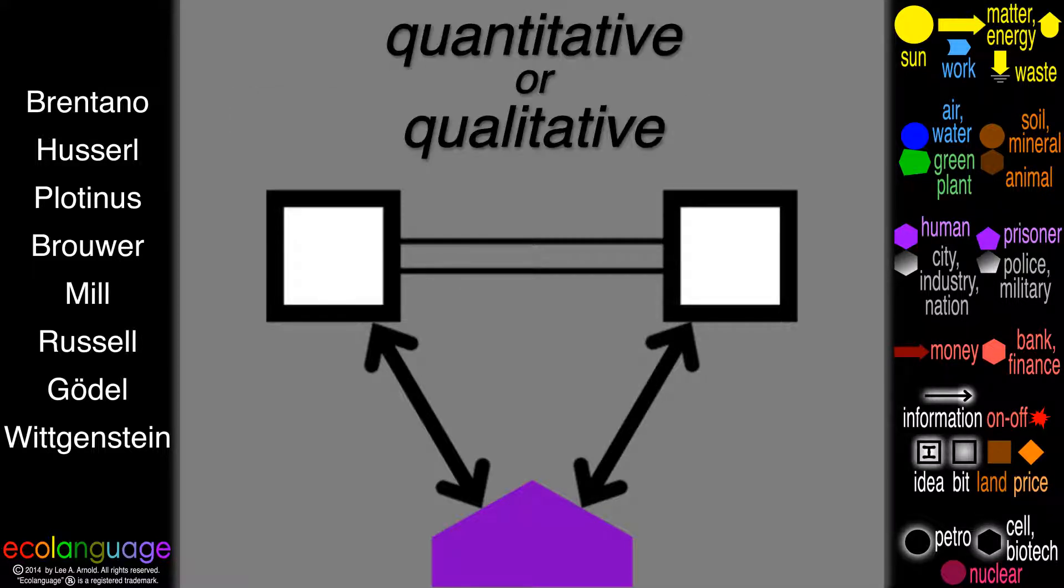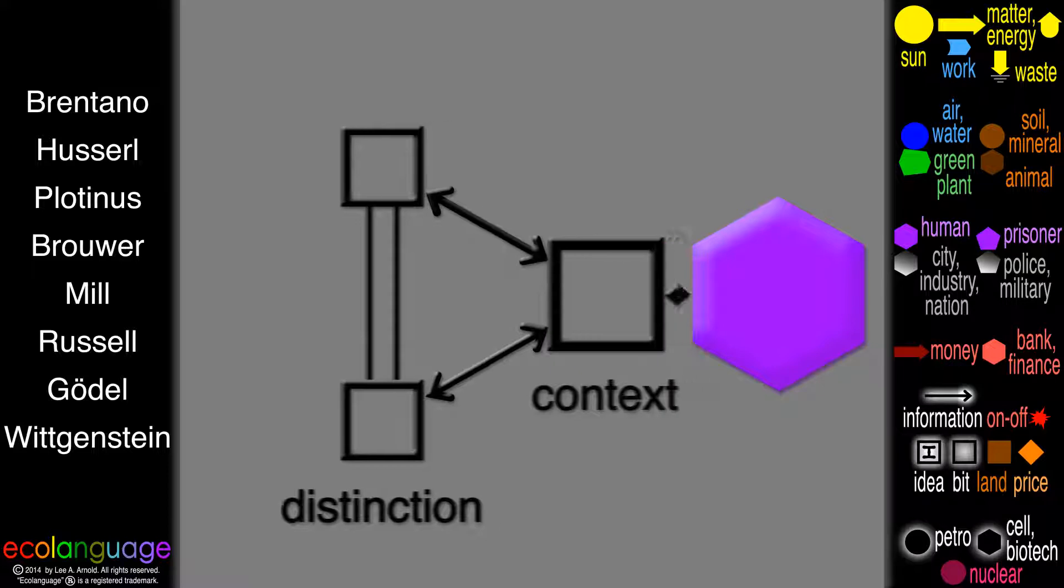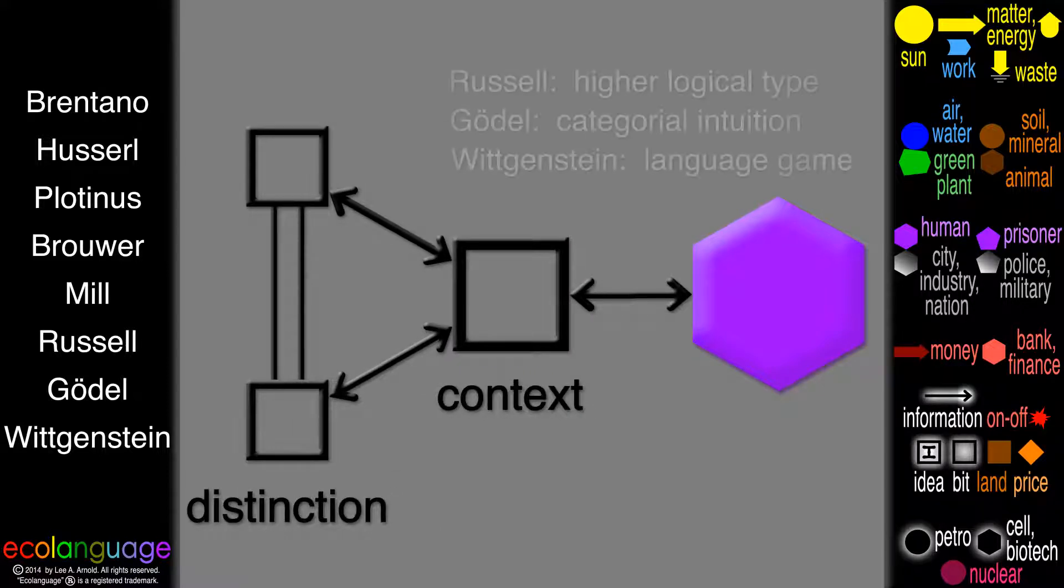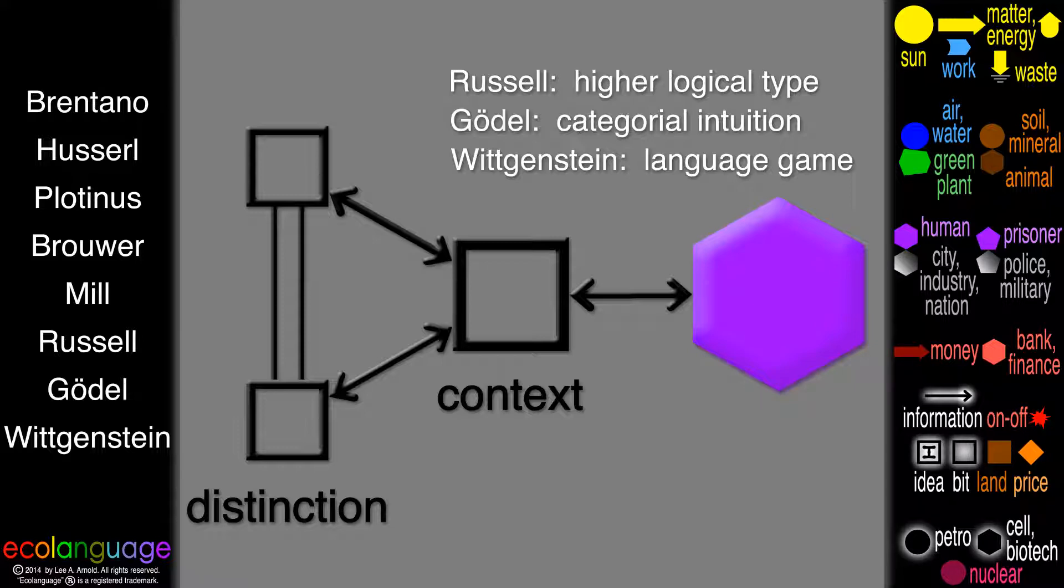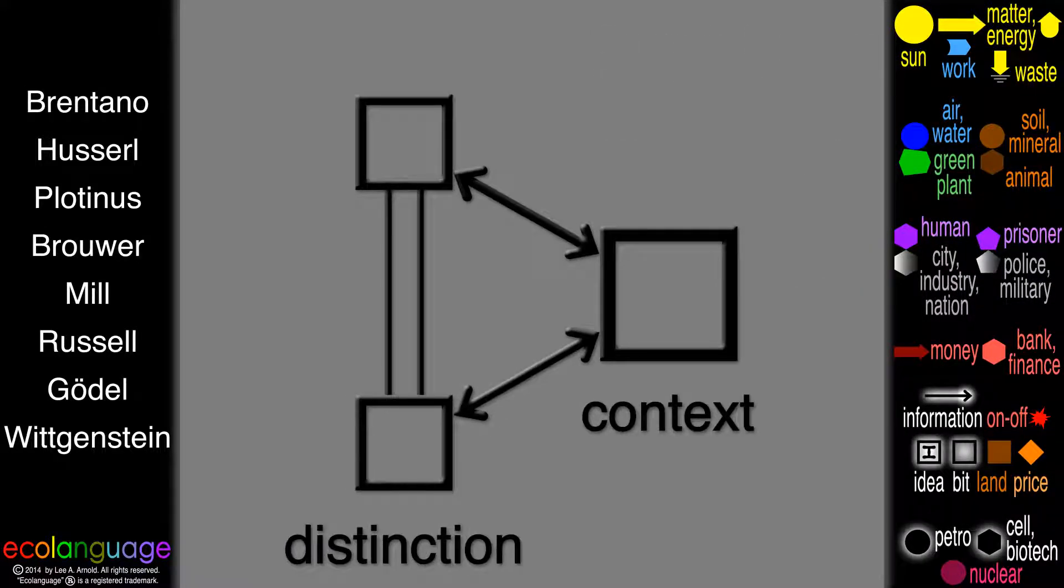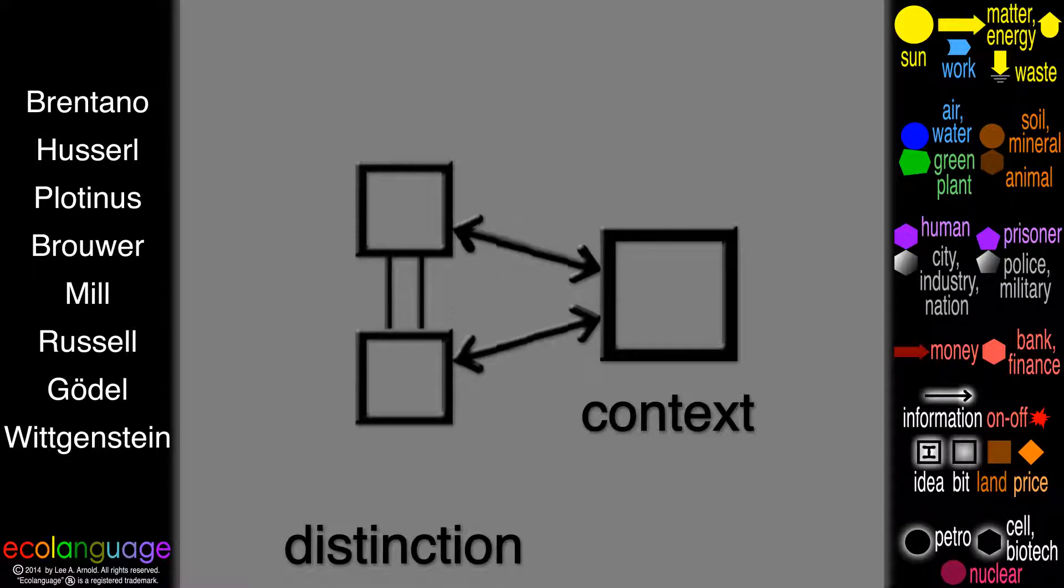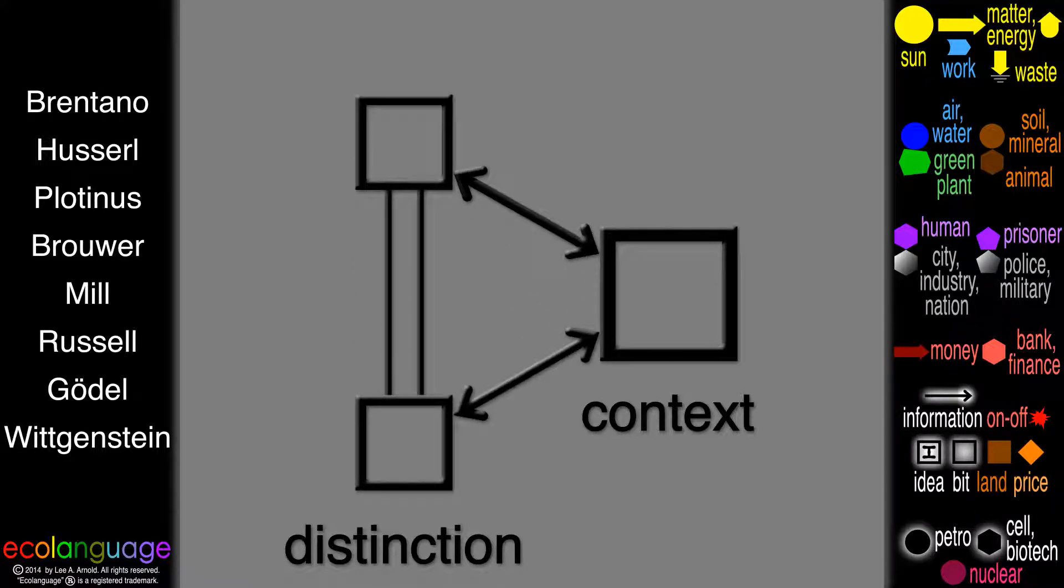The distinction can be quantitative or qualitative, and the distinction is always under a larger context of a higher logical type, as Russell, Gödel, and Wittgenstein all came to suspect, each in his own way. Almost every kind of basic idea falls into this general pattern of a somehow commensurate distinction under an incommensurate higher context.